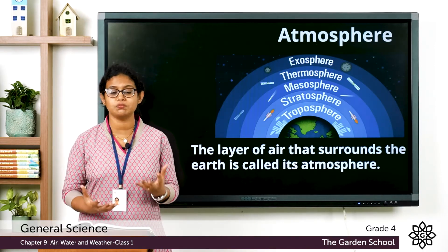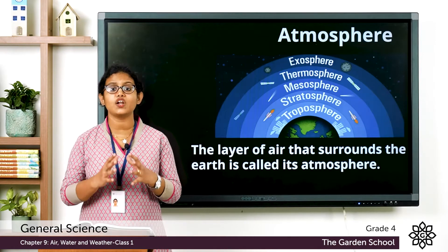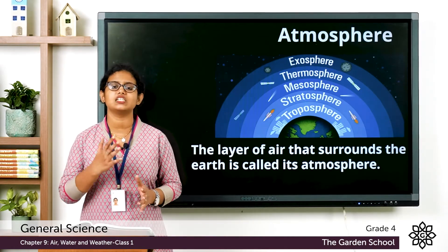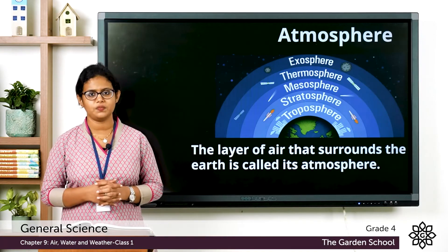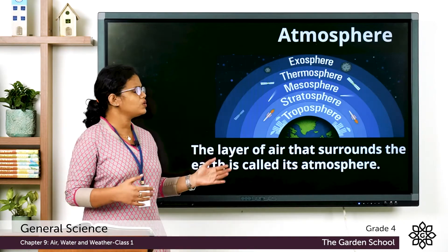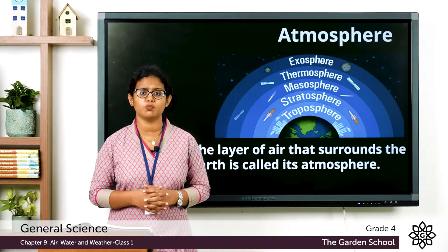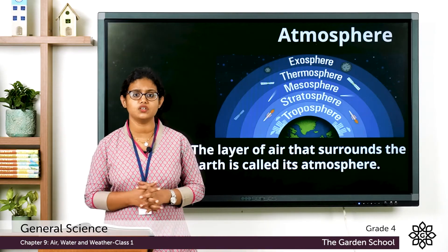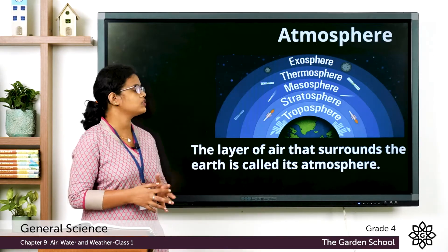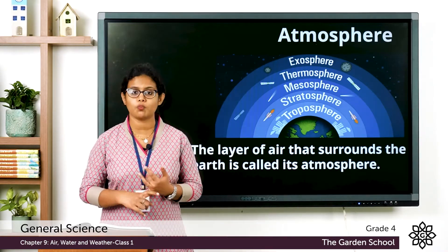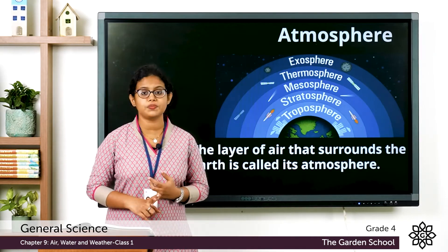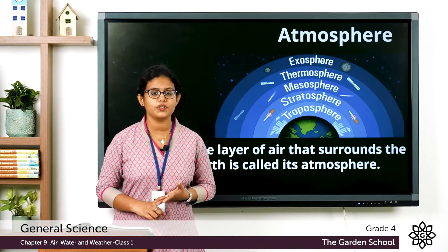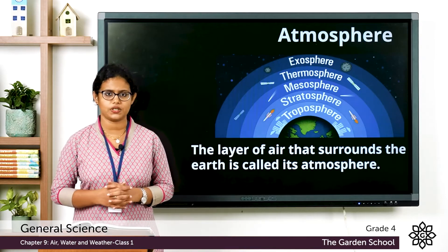So what is atmosphere? The layer of air that surrounds the Earth is called the atmosphere. Do you know the different layers of atmosphere? There are five different layers: the troposphere, the stratosphere, the mesosphere, the thermosphere, and the exosphere.